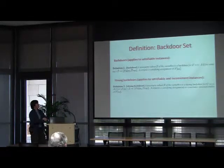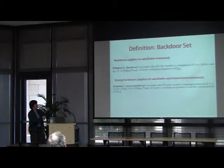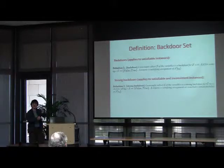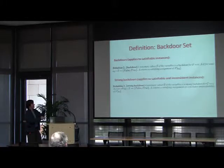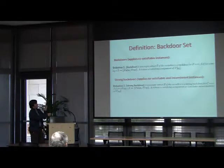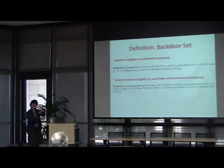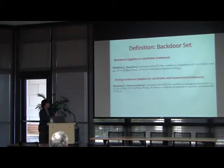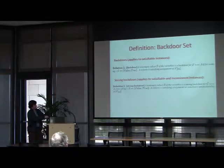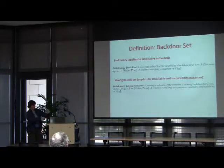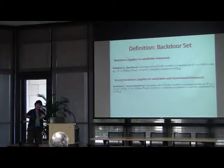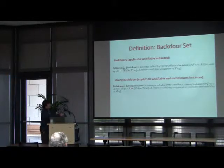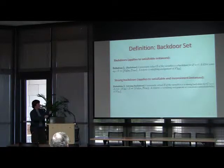A backdoor set S with respect to subsolver A is a subset of the variables such that there's some assignment to that subset so A will return a satisfying assignment when you plug in those values — this works for satisfiable instances. There's also a notion of strong backdoors: a subset such that no matter what partial assignment you plug into the subset, the subsolver A can take care of the rest and conclude SAT or UNSAT. Identifying a strong backdoor and trying all possible assignments lets you conclude UNSAT.